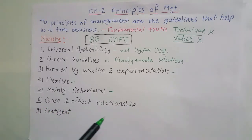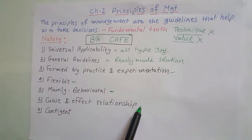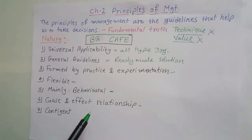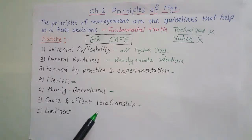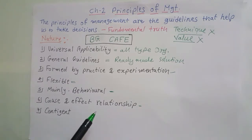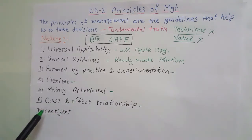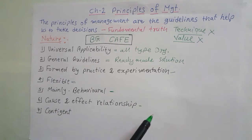Now, cause and effect relationship. Some of the principles in management establish a cause and effect relationship. For example, division of work leads to specialization and will increase the efficiency of labor. So division of work is the cause, and improved efficiency is the effect or result. In this way, these principles establish a cause and effect relationship.